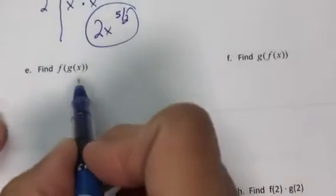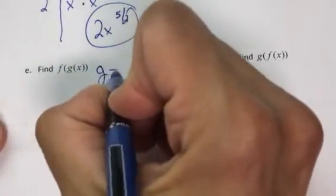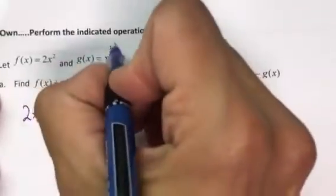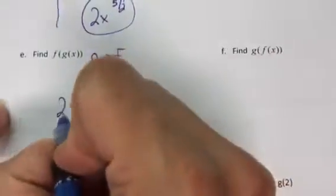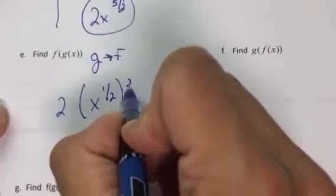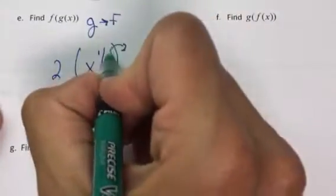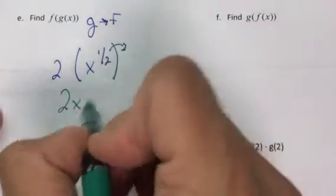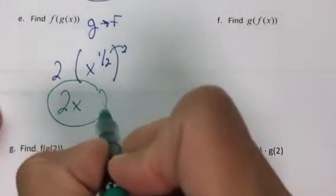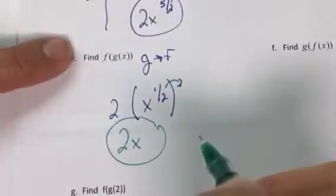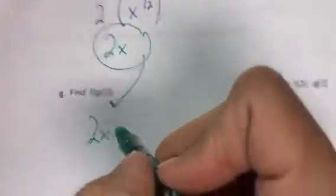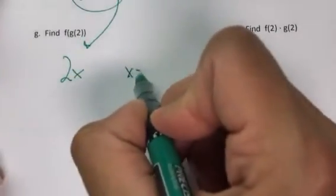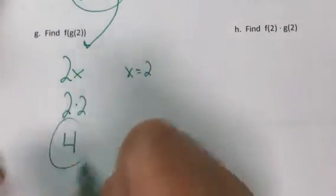For the composite with fractional exponents: g∘f means f goes into g. Normally x is squared in g; now x to the one-half is squared. Apply exponent rules — multiply exponents — to get 2·x¹ = 2x. Then to evaluate at x = 2, substitute 2 in for x in the result: 2(2) = 4.